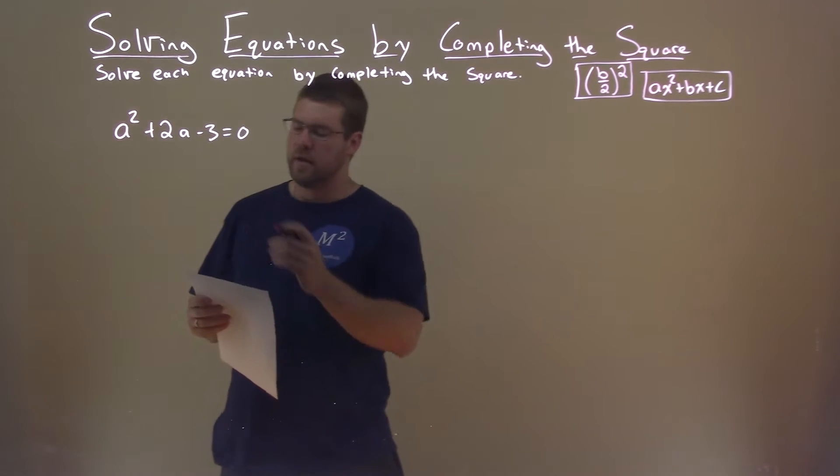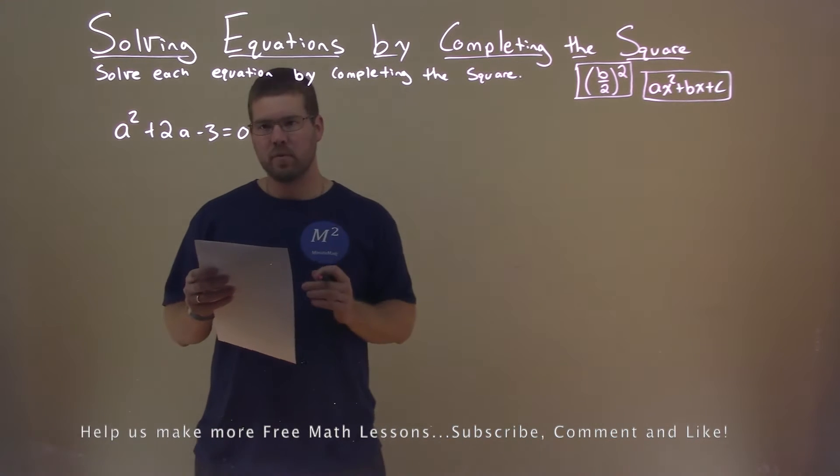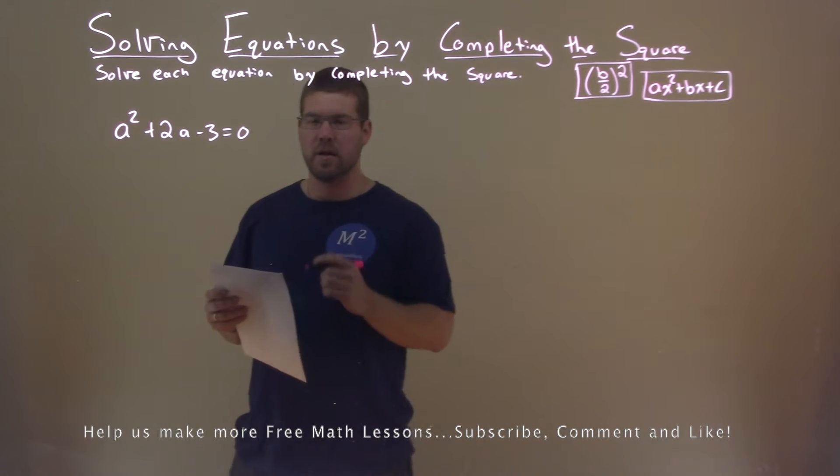We're given this problem right here, a squared plus 2a minus 3 equals 0, and we need to solve this by completing the square.